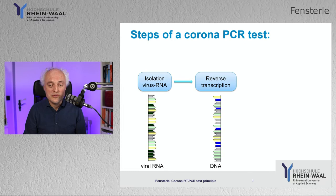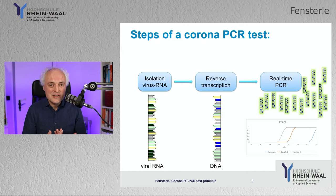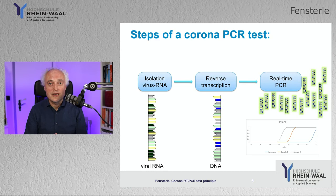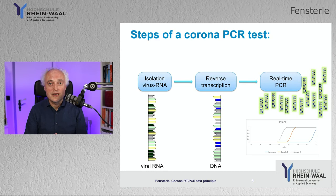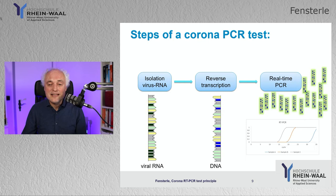We have the reverse transcription in the test tube, and then we do a so-called real-time PCR. The difference between a normal PCR and a real-time PCR is that after each amplification cycle, we measure how much DNA was produced. The DNA is fluorescent, so we measure the fluorescence light intensity. This is plotted with cycle number on one axis and intensity on the other.